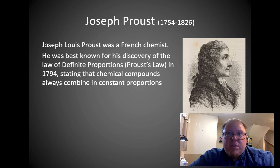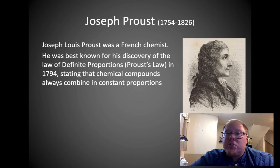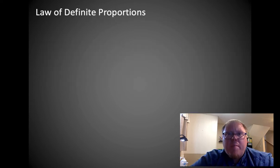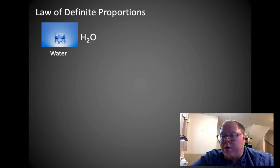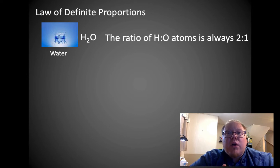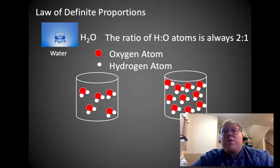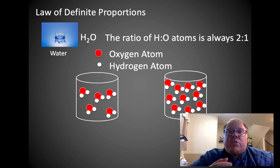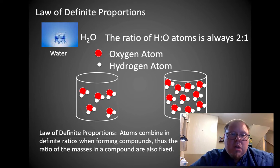Now I want to talk about Joseph Proust, who lived around the same time as Lavoisier. Joseph Proust was a French chemist best known for his discovery of the law of definite proportions, Proust's law, in 1794, stating that chemical compounds always combine in constant proportions. If I have water, H2O, the ratio of hydrogen to oxygen is always 2 to 1. We always have twice as much hydrogen as oxygen in this material. Even though it's made of those two, it's a set ratio. The water molecule has two atoms of hydrogen for every one atom of oxygen.